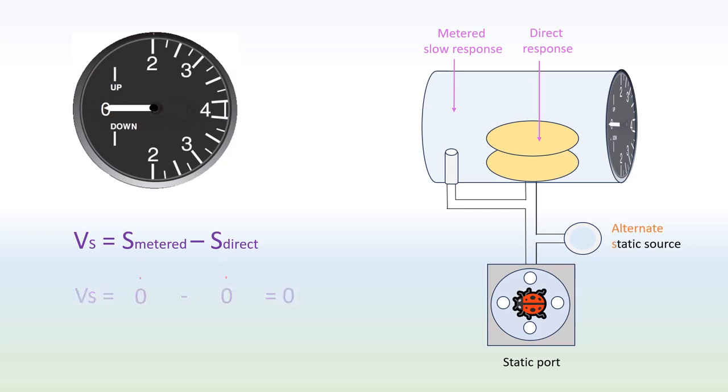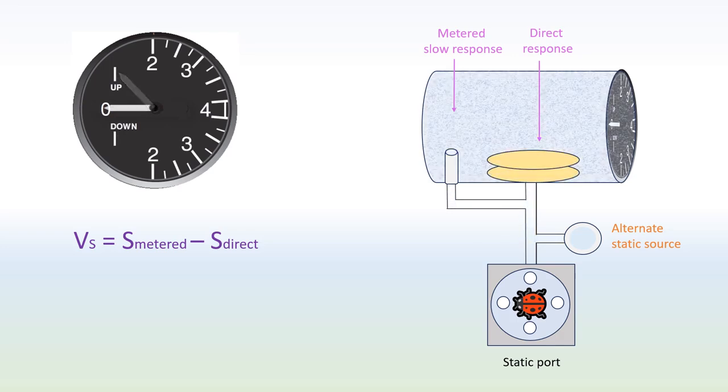But don't worry, the alternate static source comes to the rescue. As both the direct and metered pressure still come from the same source, there's no real impact on the vertical speed except during the switch, there might be a very brief fluctuation in the reading depending on the altitude difference from where the blockage occurs. If the switch is done in a level flight, it might momentarily indicate a climb because the alternate source usually maintains slightly lower pressure than the environment.